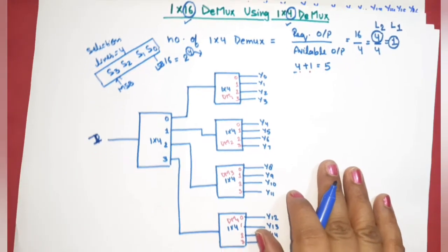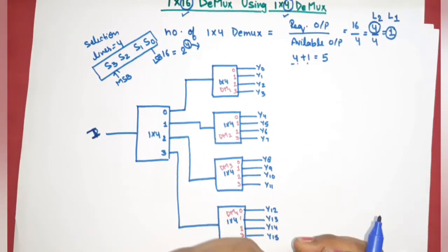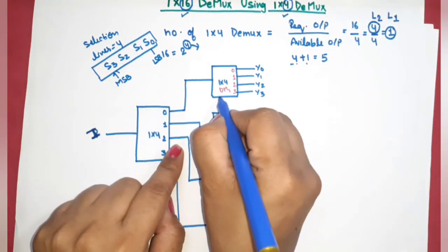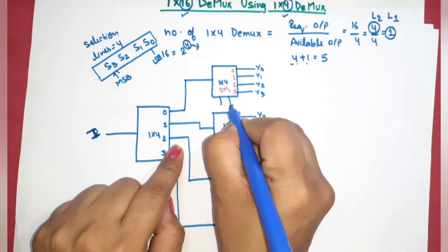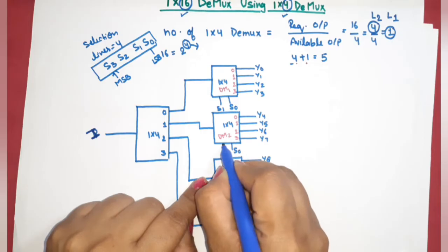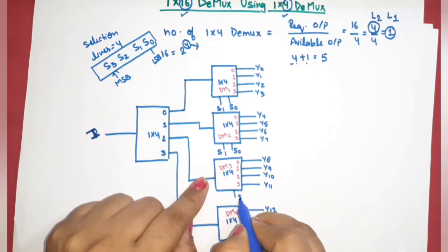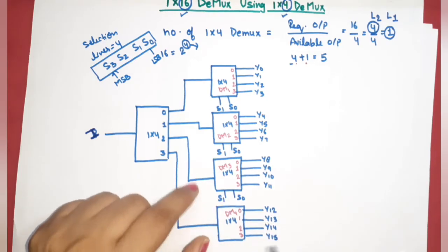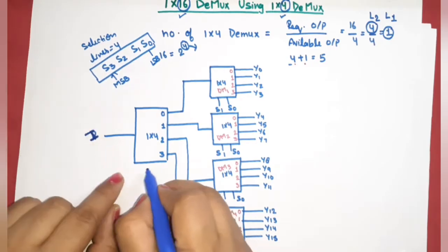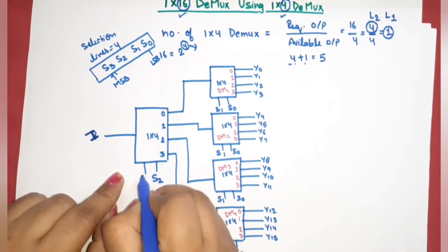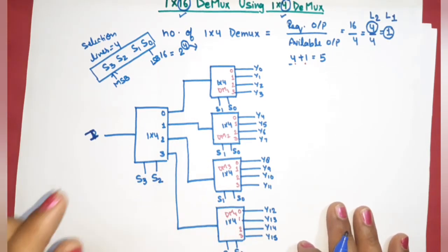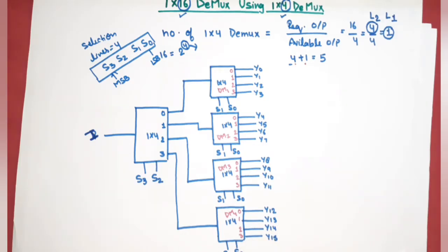When doing connections for selection lines, remember that the output level will use the LSB side. So at label 2, the selection lines will be S0 and S1, which are common for all four demultiplexers — you can connect them separately or together, but they are all the same. The MSB side, S2 and S3, will be connected at label 1. This completes our 1-to-16 circuit using 1-to-4 demultiplexers.